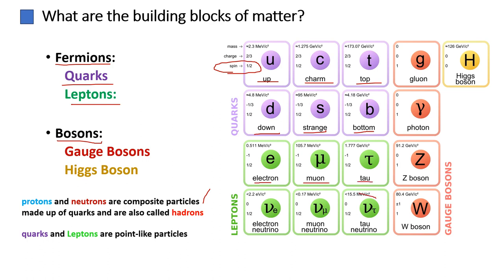Bosons, on the other hand, have integer values of spin and act as force carriers between particles. Gauge bosons include the photon, mediator of electromagnetic force; W and Z bosons, mediators of weak nuclear force; and gluons, mediators of strong nuclear force. The Higgs boson, discovered in 2012, is associated with the Higgs field and is responsible for giving particles their mass.